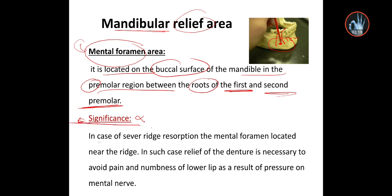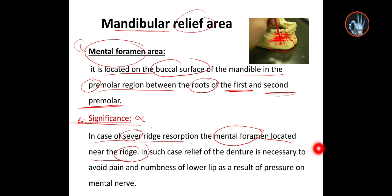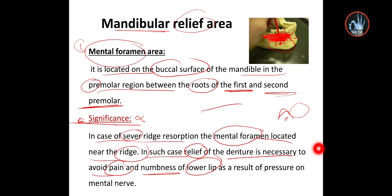Significance: In the case of severe ridge resorption, the mental foramen is located near the ridge. If there is resorption and the alveolar ridge has resorbed until near the foramen, relief of the denture is necessary. We must make a space for this foramen — a cavity — to avoid pain and anomalies of the lower lip, as the mental nerve supplies the lower lip and the chin.